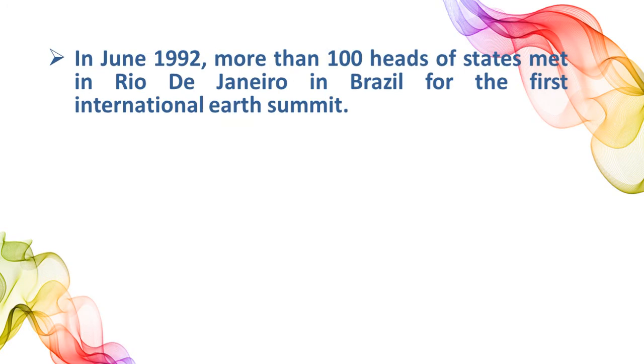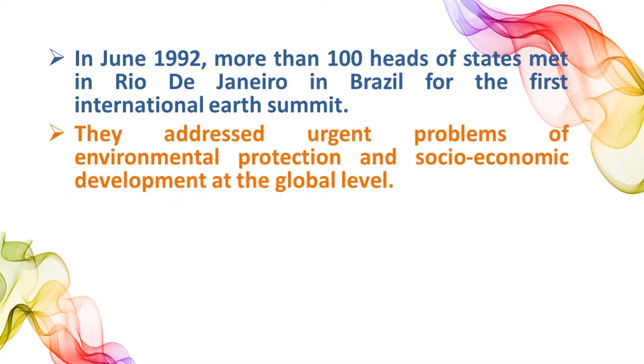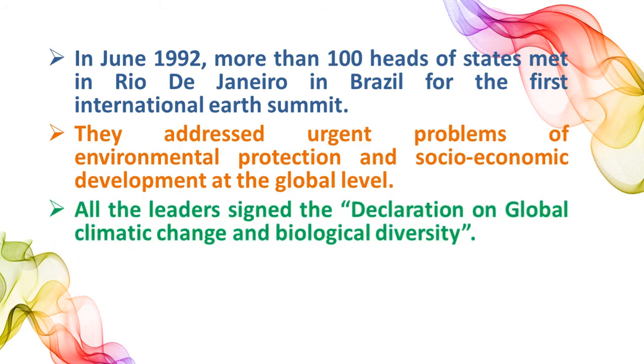In June 1992, more than 100 heads of states met in Rio de Janeiro, Brazil. These leaders addressed the urgent problems of environmental protection and socio-economic development at the global level. All leaders signed the declaration on global climatic change and biodiversity at the first International Earth Summit. They endorsed the global forest principles and adopted Agenda 21 for achieving sustainable development in the 21st century.